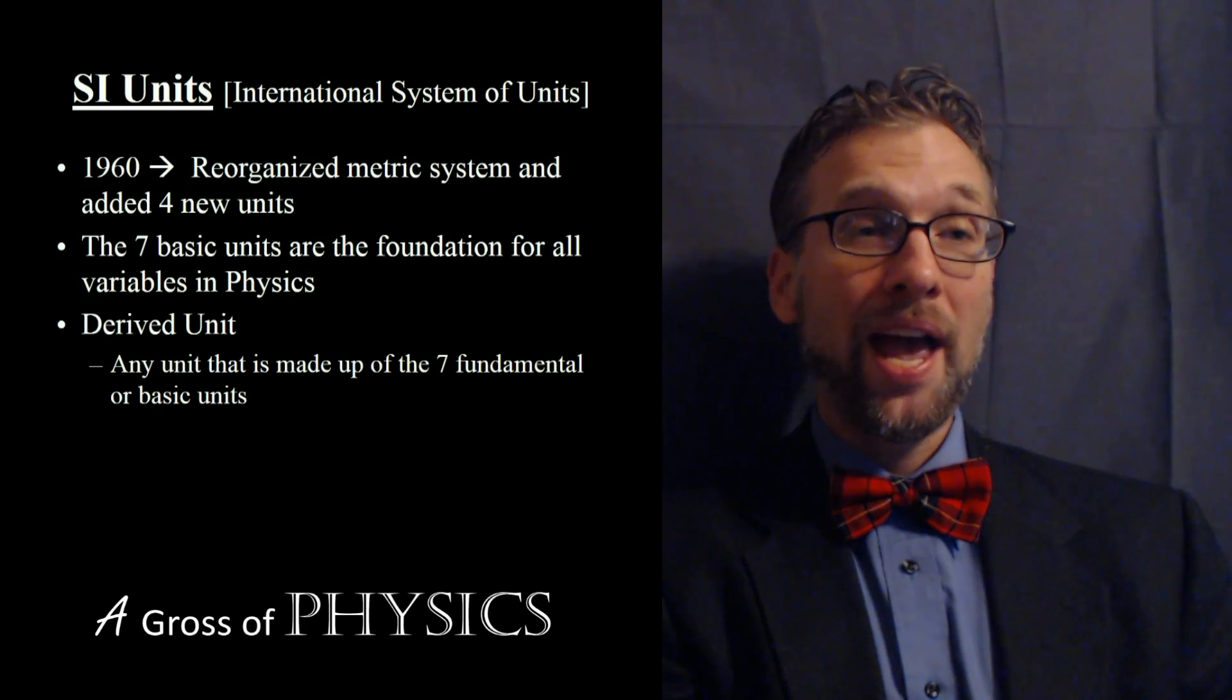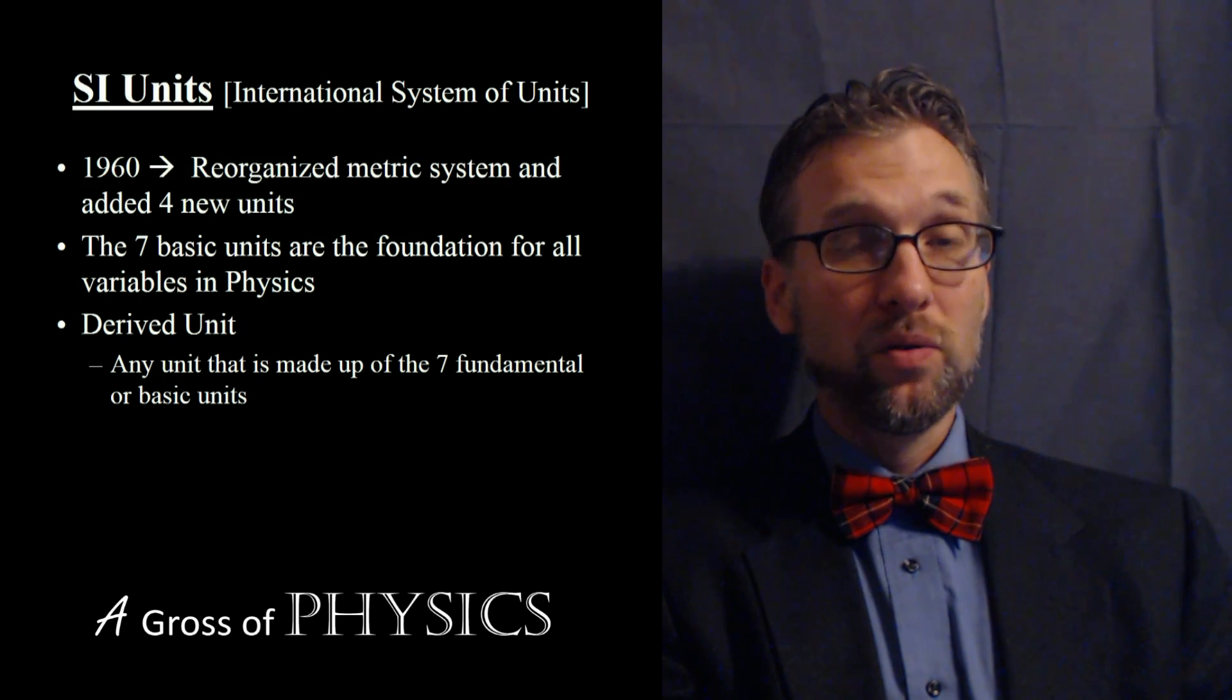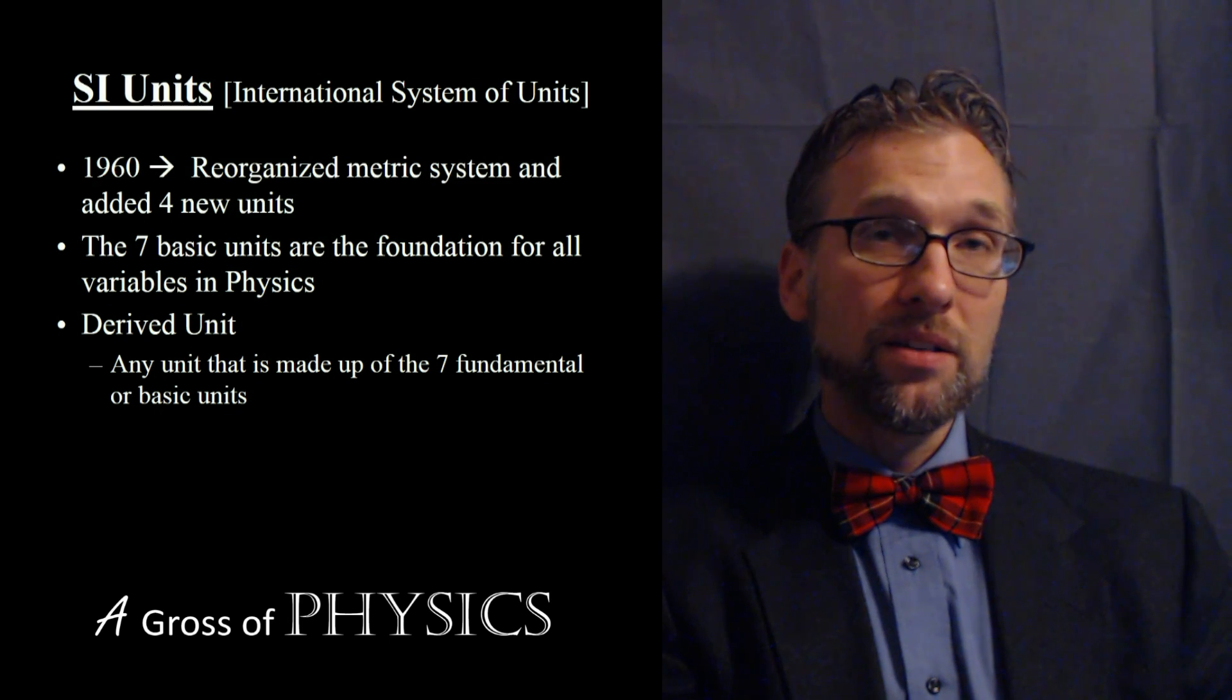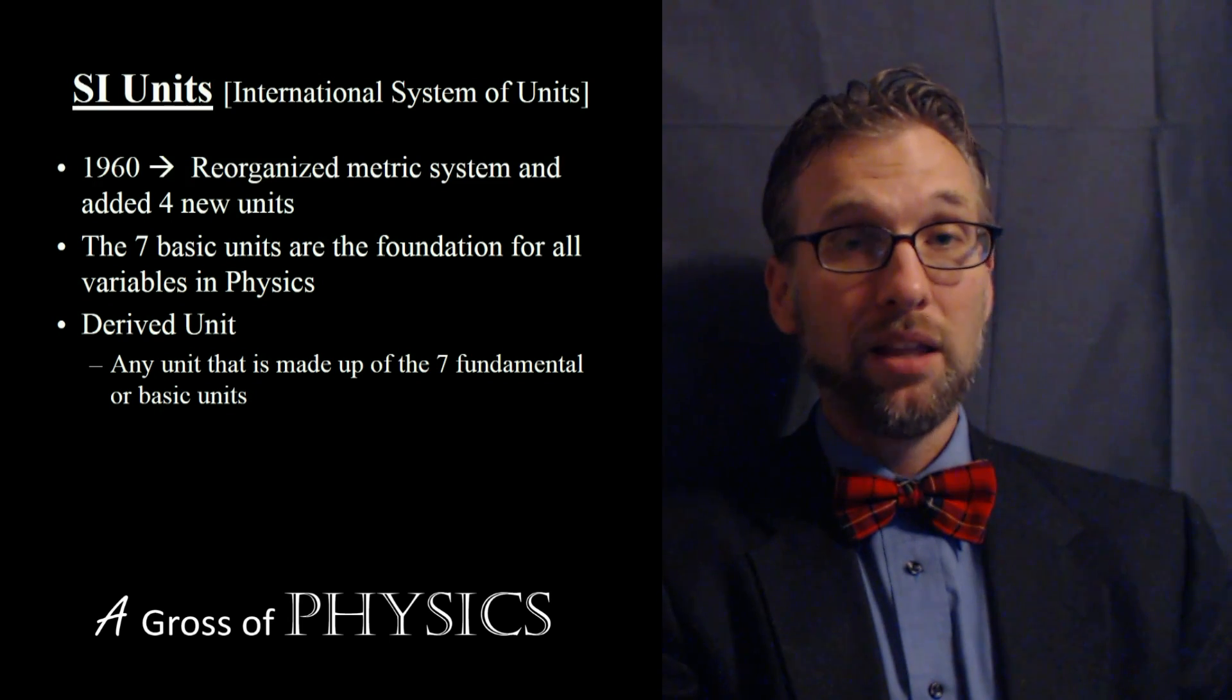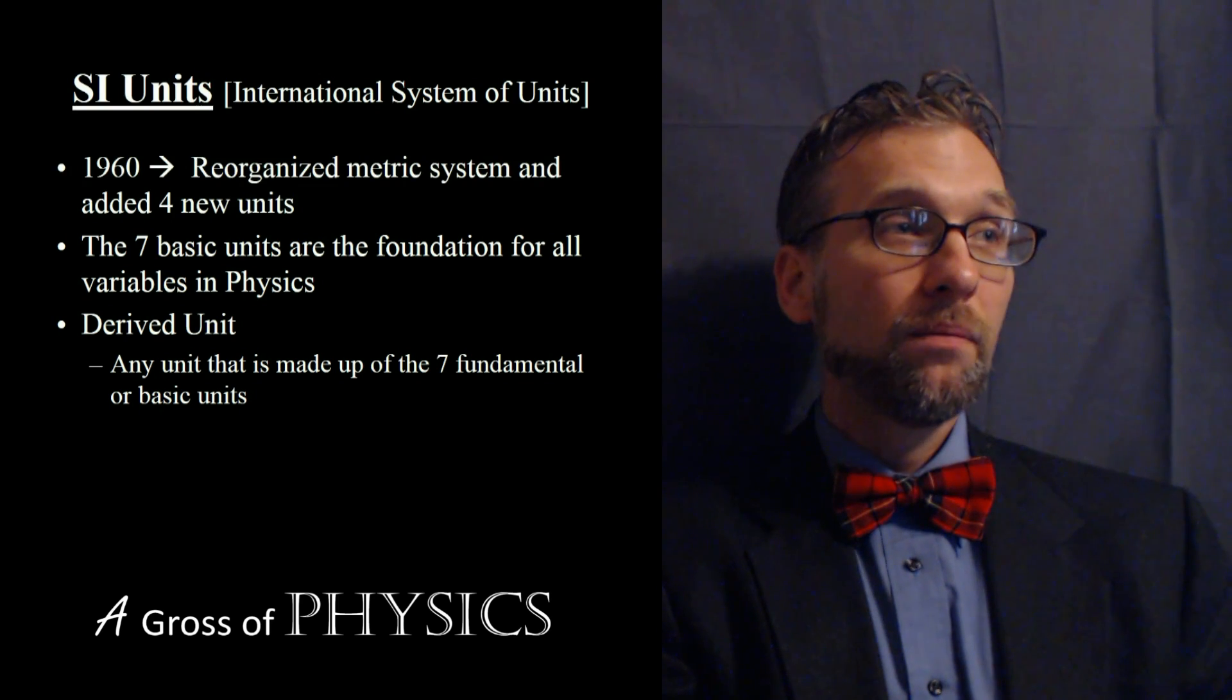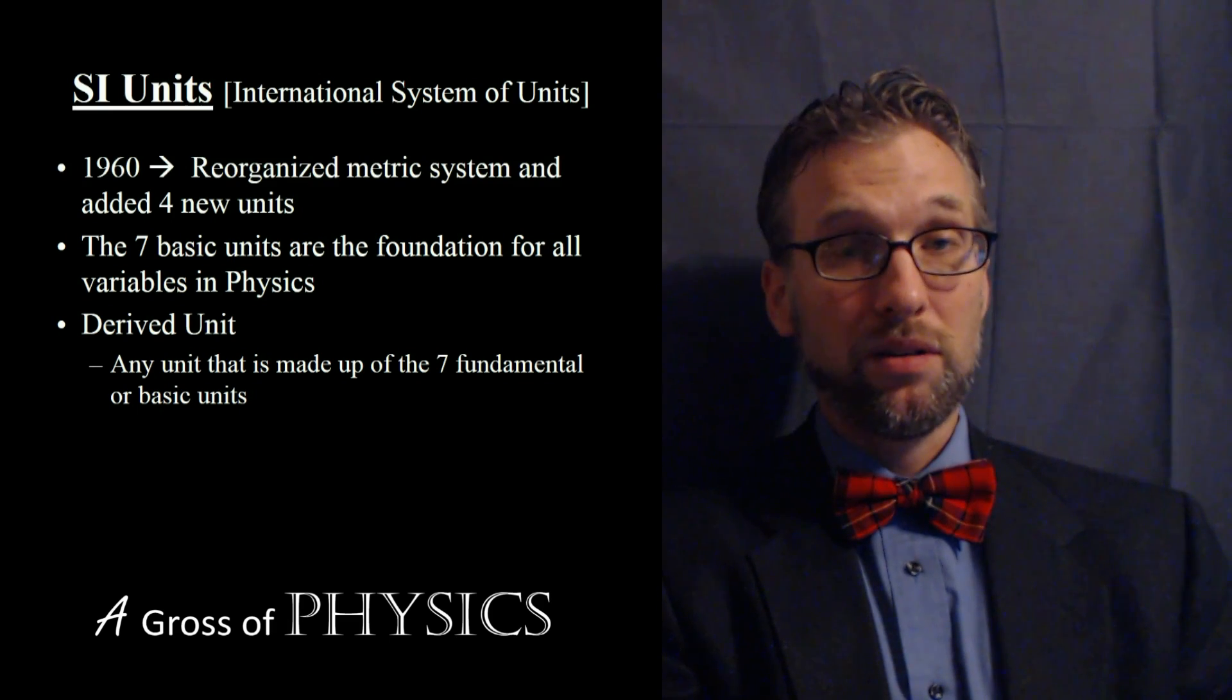Well in 1960 we added some values to the metric system. We call it the SI units, or the International System of Units. And what we did is added four more units to the three that were original, which was length, mass, and time. And those four new ones added up to a total of seven. And those are the seven basic units of the metric system.